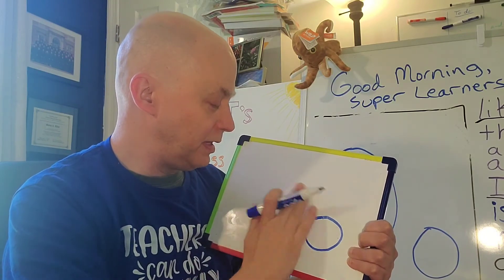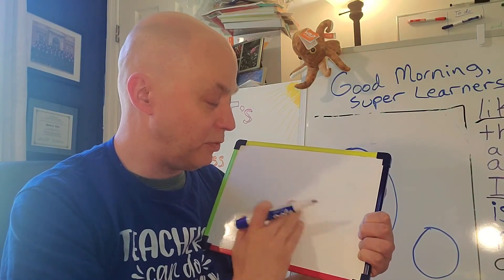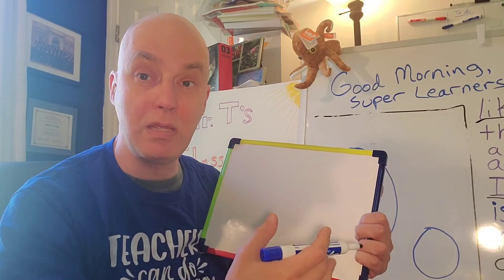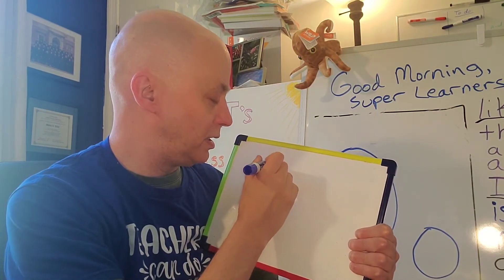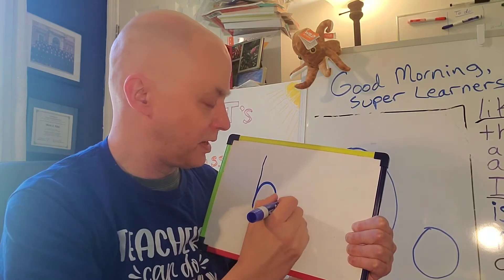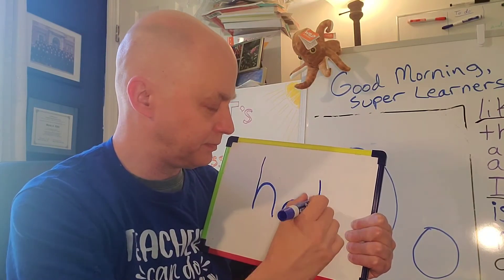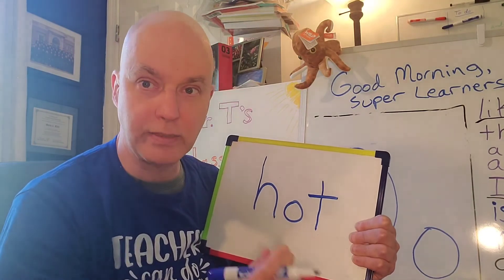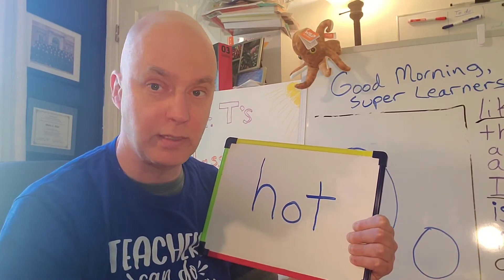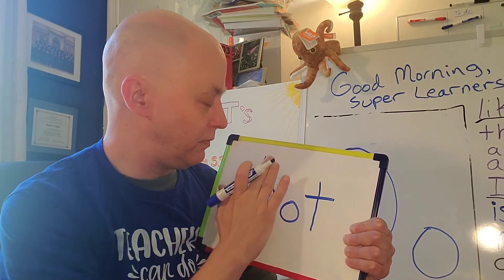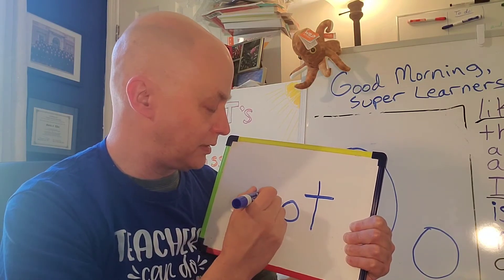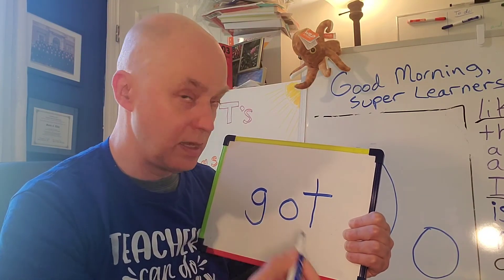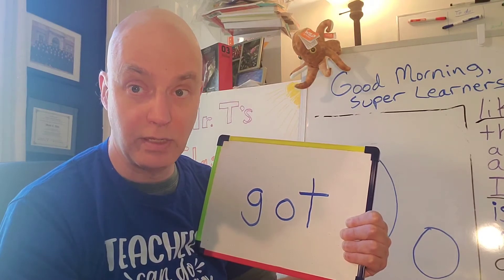But we also have, the letter O can also be very important because if we put it in the middle of a lot of words. It's going to be hot. Hot. It's going to be hot outside. Then we can also put it in the middle of got. Got. I have got to get a drink.